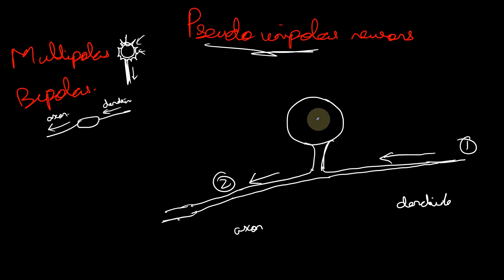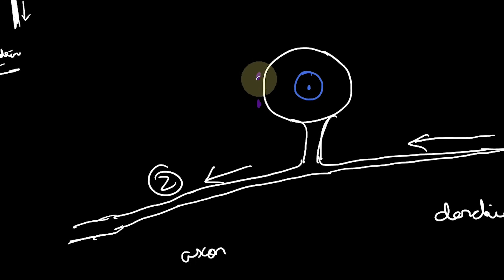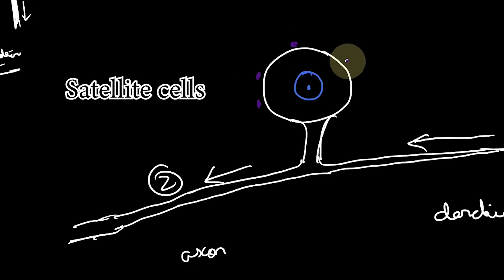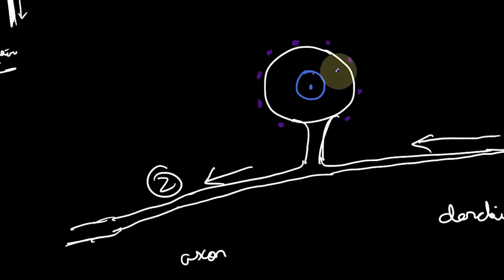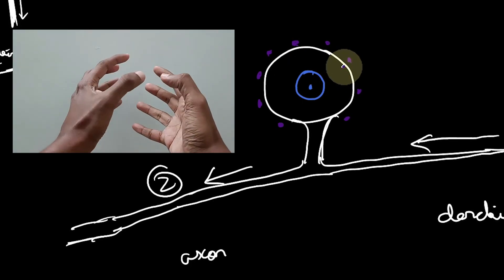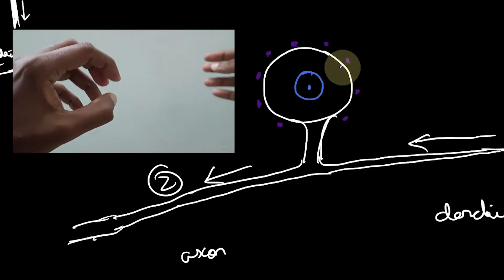Now, what is interesting about the pseudo-unipolar neuron? It has a large, roundish, spherical cell body with a nucleus that is relatively central and has a nucleolus, because this is an active neuron. Around these neuronal cell bodies, you will have satellite cells — the peripheral glial cells. These cells are arranged three-dimensionally around the cell body. A single roundish cell body, with satellite cells surrounding it.